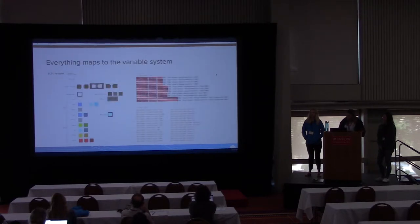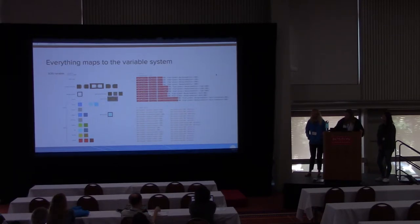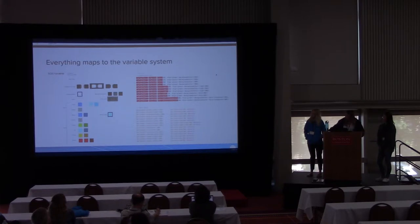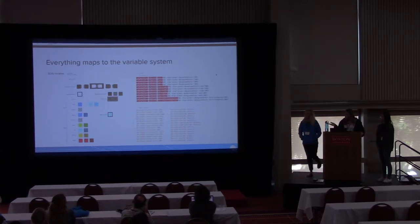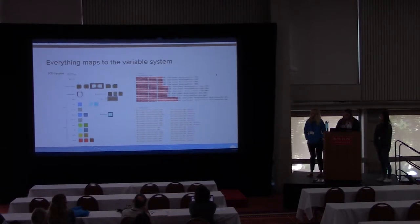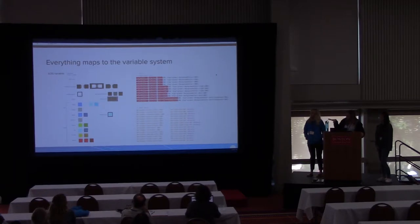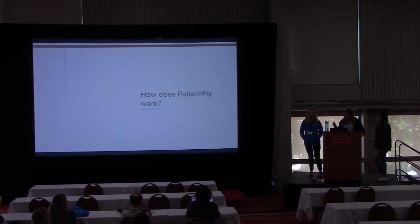Lastly, within our design system everything maps to the variable system. Our team is composed of designers and developers, and we have a design library that they're able to use. We break it down so it matches directly with the variable system — it was created to parallel the CSS. Not only does that make it easier for designers to design, but it also allows designers and developers to communicate on more of the same level, and all color names will match with the variable name listed on the right.